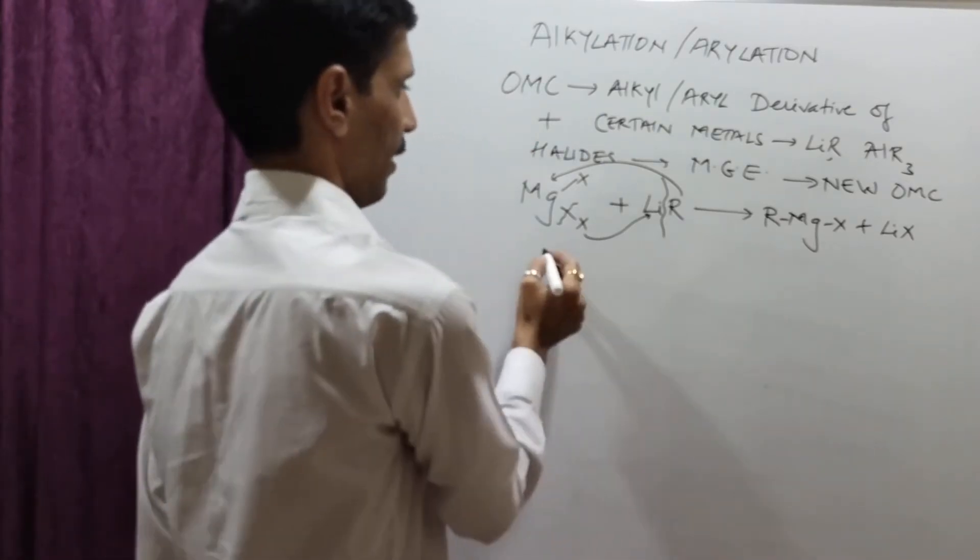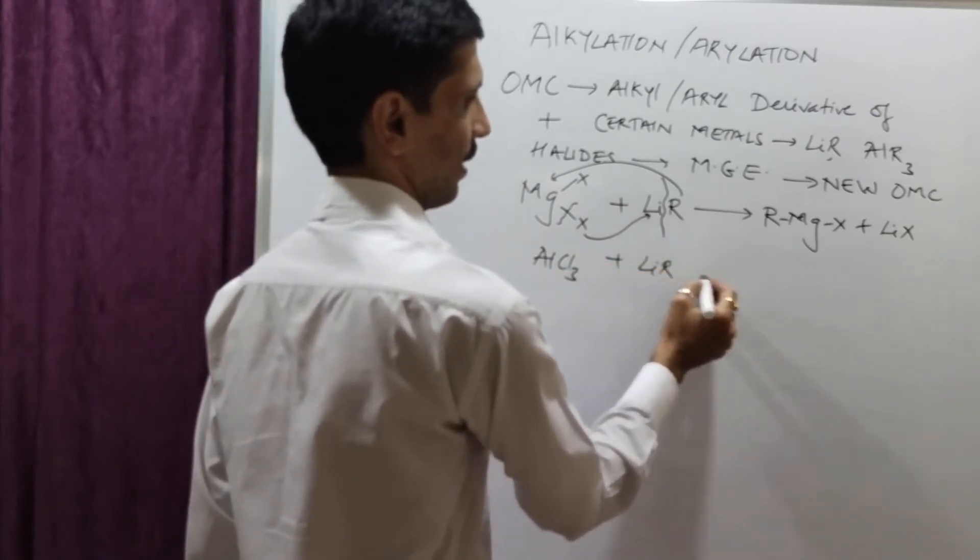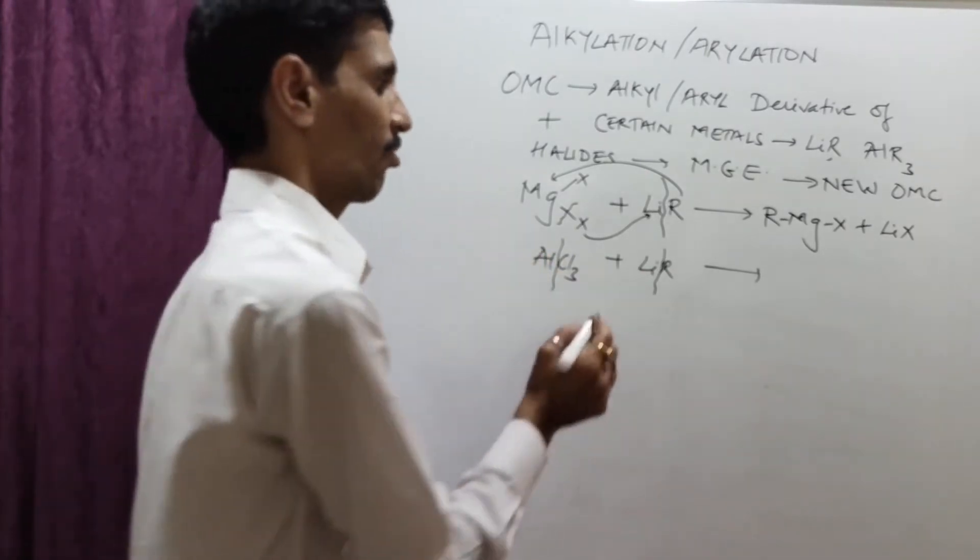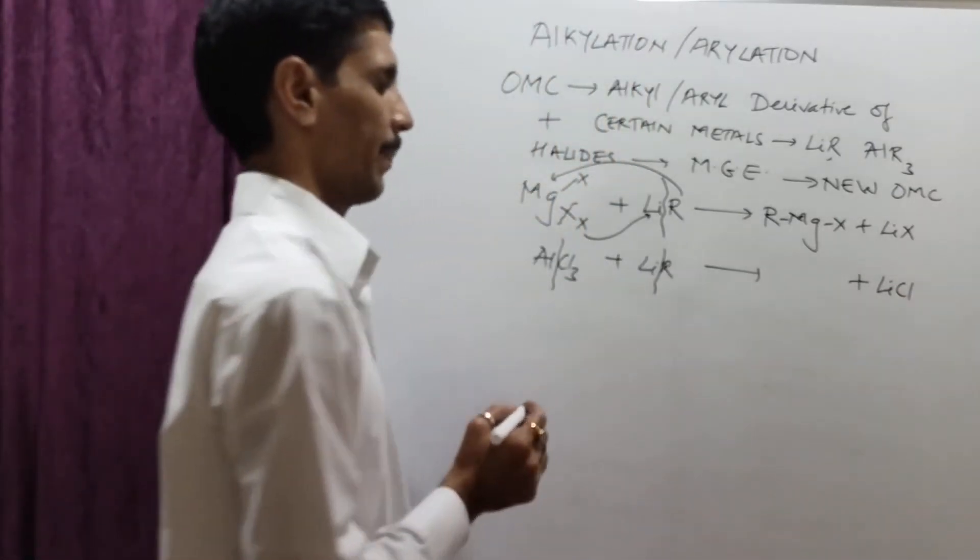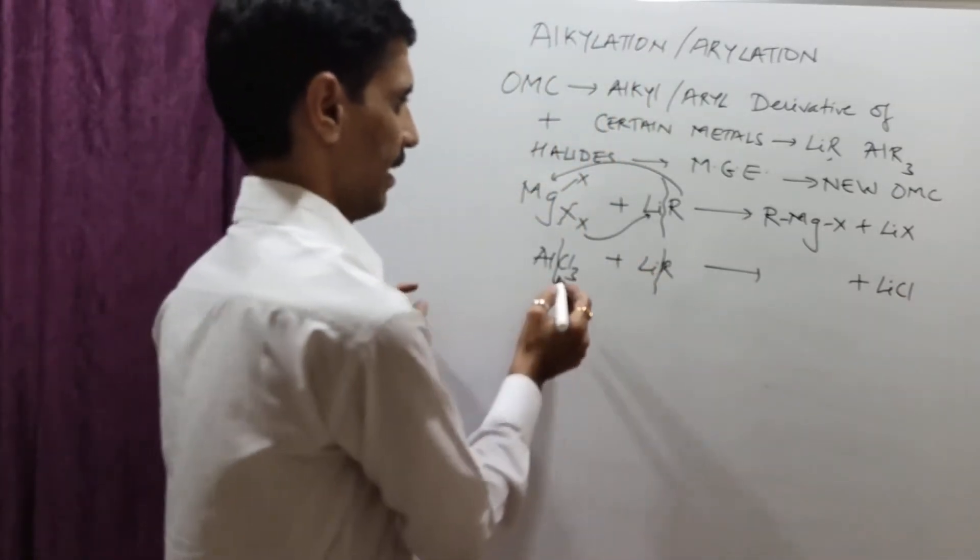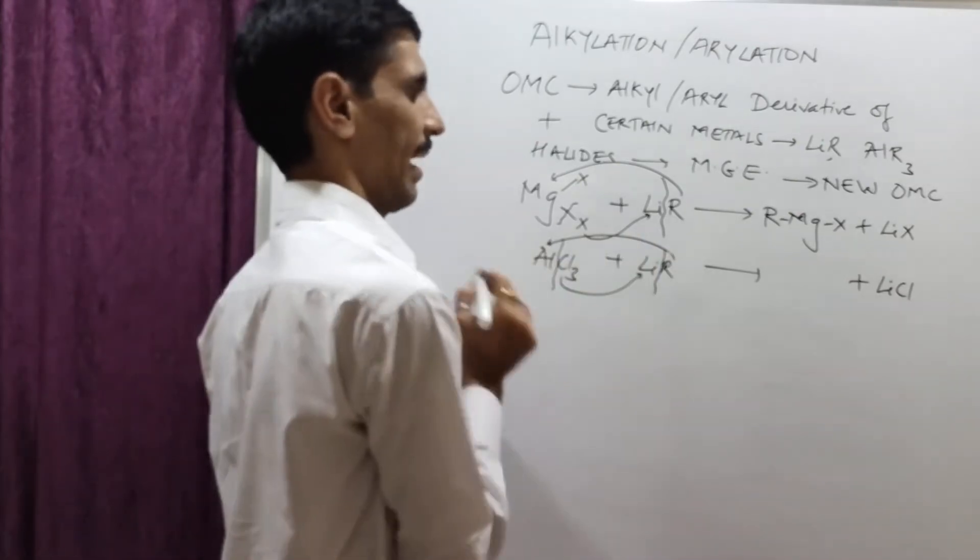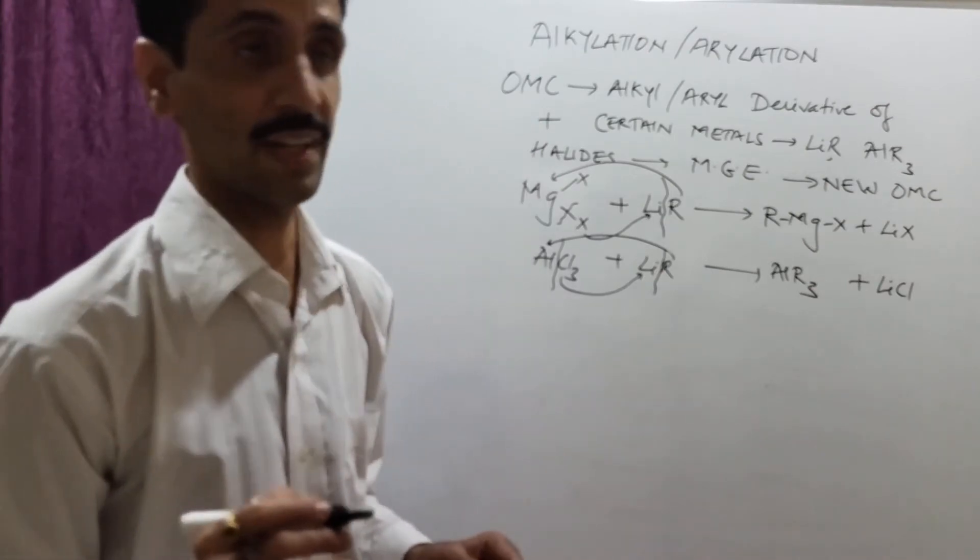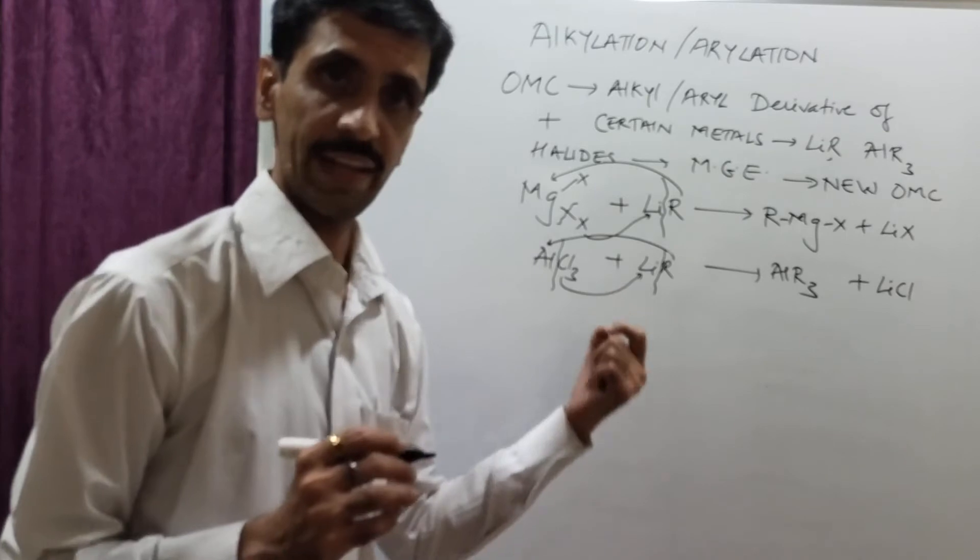Similarly, we can have AlCl3 combining with LiR. This bond breaks. Now, this is an example of a complete bond breaking. Obviously, we are going to get LiCl. And here, what happens is, Al will go with R. As the Cl will go towards lithium, the R group will go towards aluminium. And we are going to have AlR3. Since aluminium valency is 3, so we get AlR3.